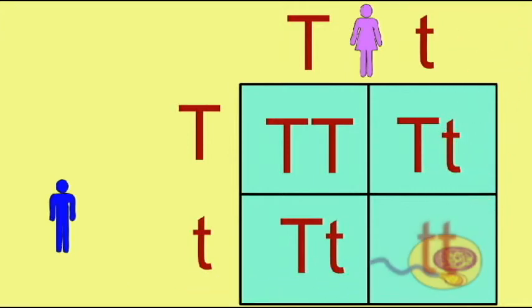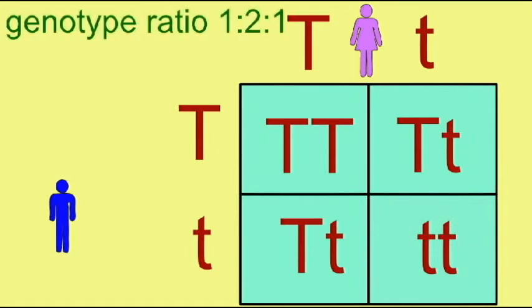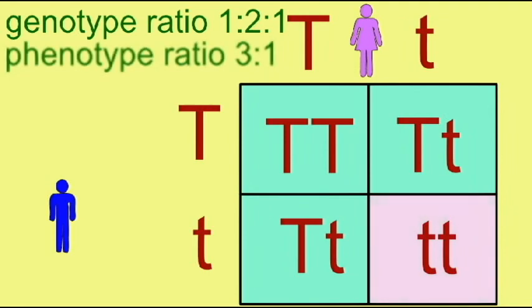Three quarters of these offspring would display the dominant phenotype. Those which are homozygous dominant and heterozygous would have the dominant trait, while the homozygous recessive individuals would display the recessive trait.